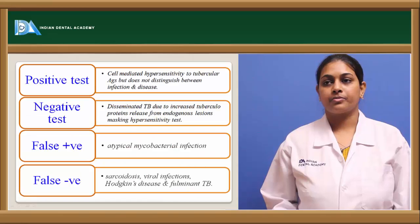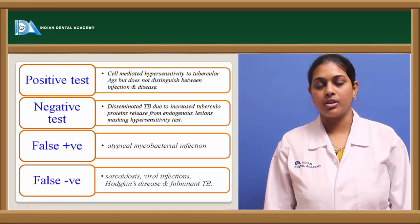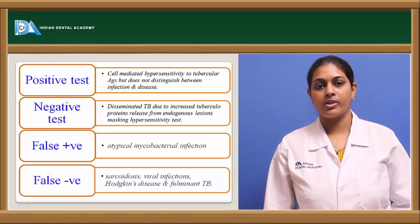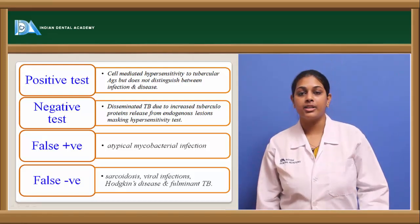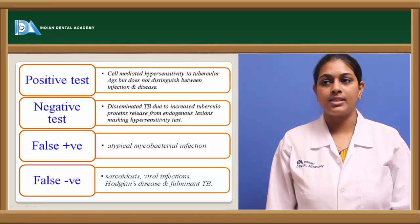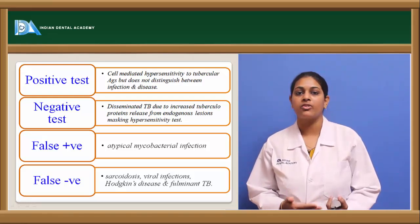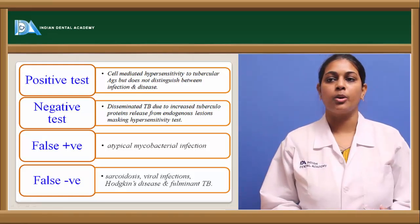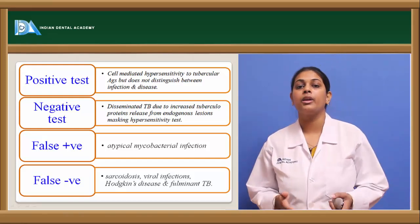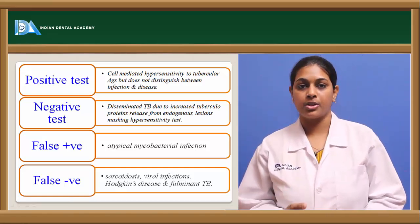Coming to the results: if the patient shows proper induration within 48 to 72 hours, the patient is said to have cell-mediated hypersensitivity — that is a delayed type hypersensitivity to the tuberculin antigen. This indicates the presence of bacilli within the body. However, a positive test does not help in distinguishing between a recent infection and an already established disease.